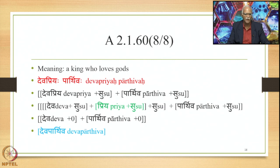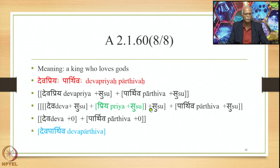Similarly, for the meaning 'a king who loves gods,' Devapriyaha Parthivaha: Devapriya plus Su plus Parthiva plus Su. Priya is the Uttarapada of Devapriya, so because of this statement, this Uttarapada is deleted along with the Supas by Supodhatup Pratipadika Yoho. We get Deva plus 0 plus Parthiva plus 0, and Devaparthiva as the finally derived compound output, meaning 'a king who loves gods.' This is Uttarapada Lopi, but it is generally described as Madhyama Padalopi, probably without taking the internal structure and overall derivation process into account.